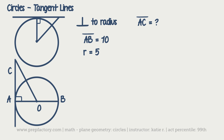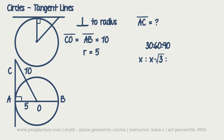They tell us CO equals 10, so we have a radius of 5 and a hypotenuse of 10. We can use the Pythagorean theorem, but we can also recognize that 5 is X and 10 is 2X — this is a 30-60-90 triangle. The ratios are X, X root 3, and 2X. With X equal to 5 and 2X equal to 10, X root 3 equals 5 root 3. So AC equals 5 root 3.